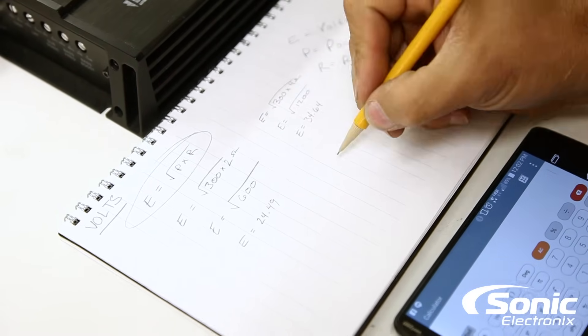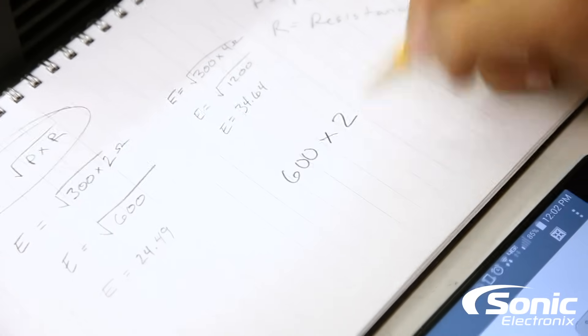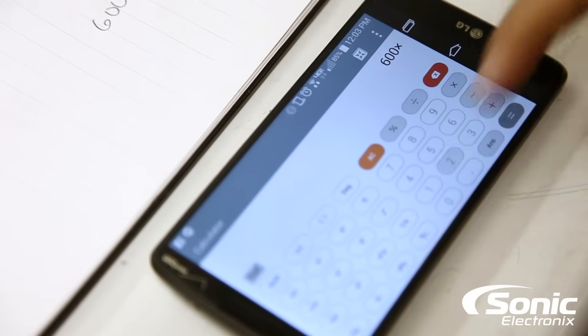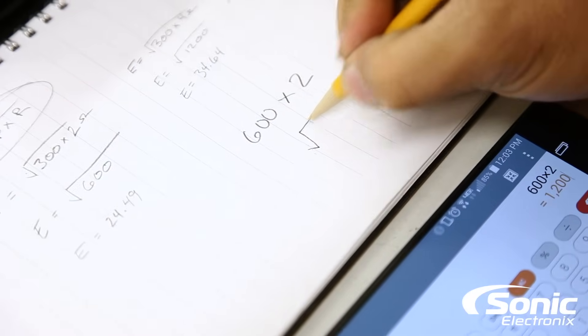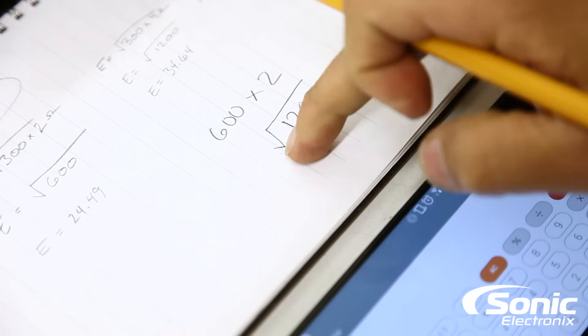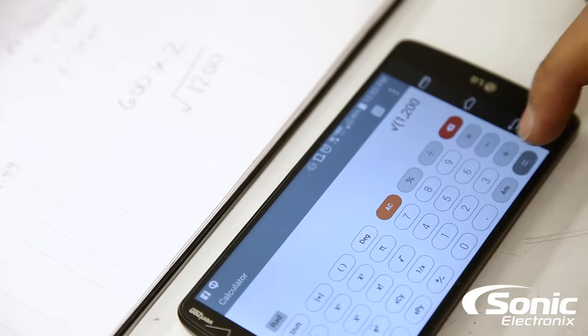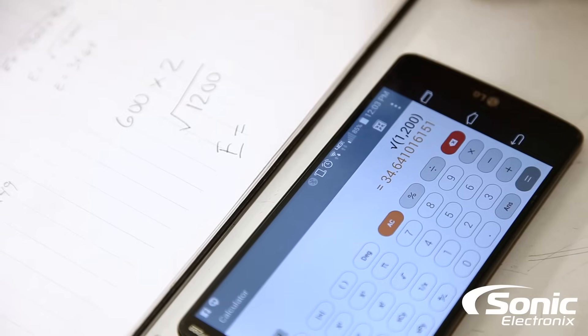So we want 600 watts in this case and we were going to do that times 2 for 2 ohms. So we're gonna do 600 times 2 equals—and we know that's gonna give us 1200. And now we want to know the square root of that 1200. Okay, perfect. Now we've got our voltage and our target voltage is 34.64.